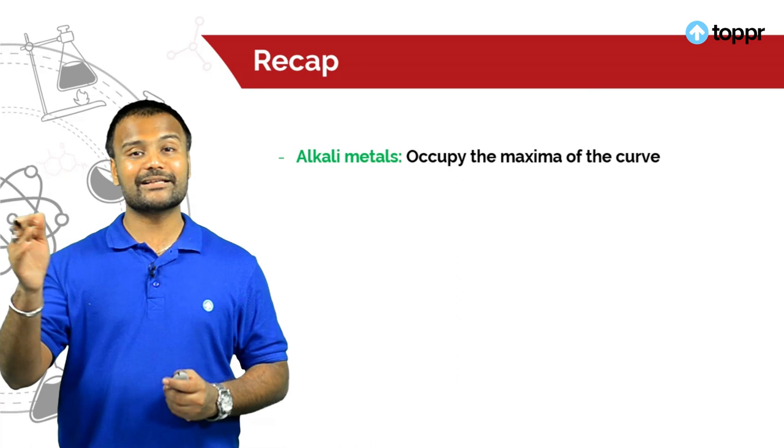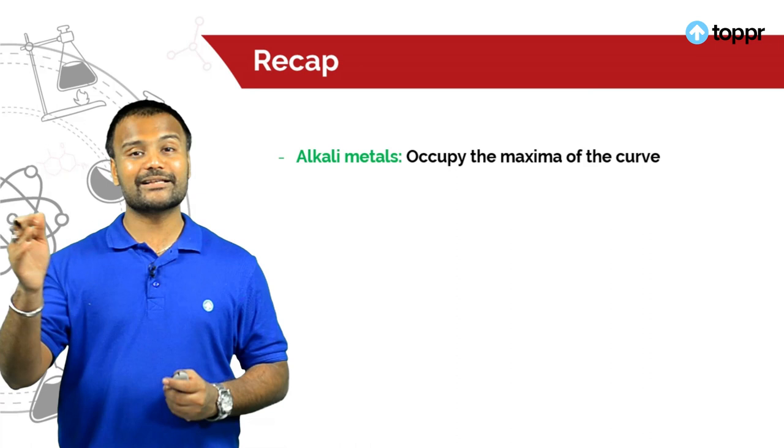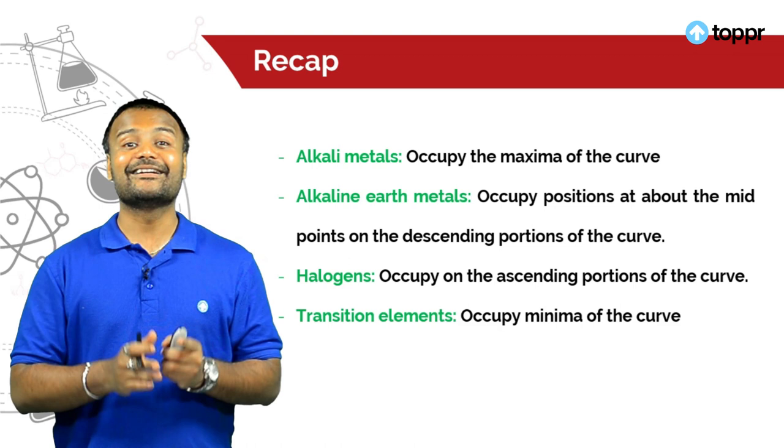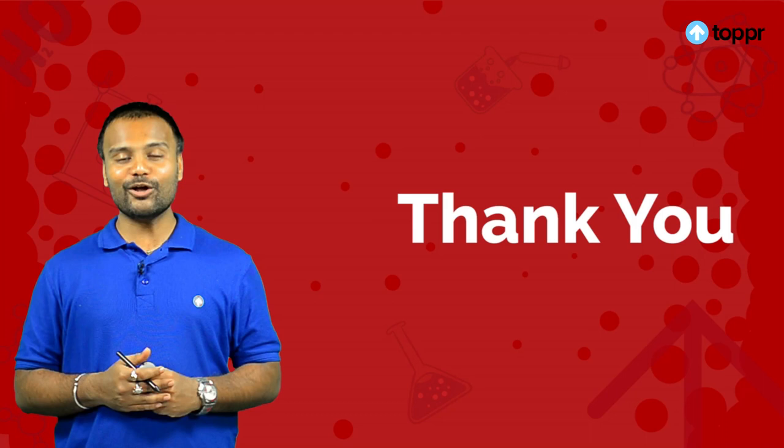Alkali metals occupy the maxima of the curve, alkaline earth metals occupy the midpoints on descending portions, halogens occupy ascending portions, and transition elements occupy the minima. This is all about Lother-Meyer's atomic volume curve. Thank you.